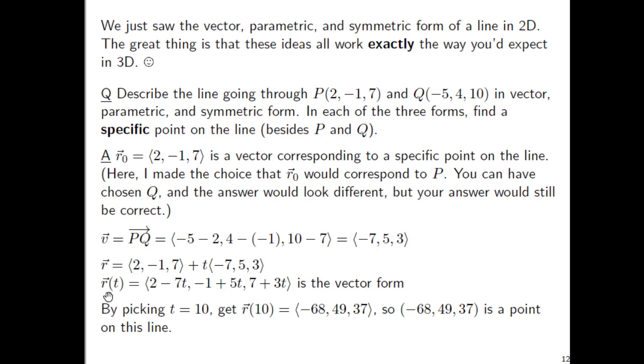Okay, we could write this again with the r of T format here as well. For instance, now to try to answer this thing about finding a specific point on the line, by picking, for instance, T equals 10, you end up getting this vector here. So negative 68, 49, 37. Now in round parentheses, that is a specific point on the line besides these two points that we already knew of.